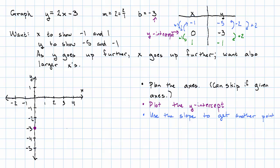And finally, we use the slope to get another point. So slope of 2 means right 1 up 2. There will be another point on our line. And now we fill in the line. And a ruler is very useful here. And there we go. There's our line.